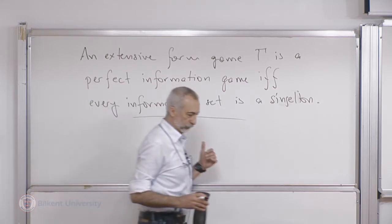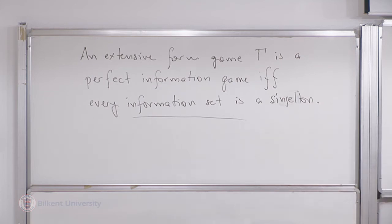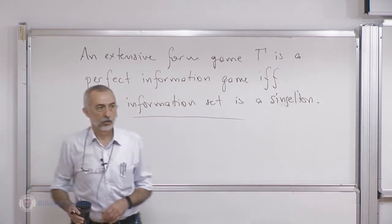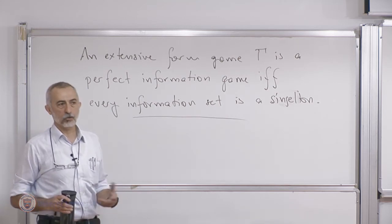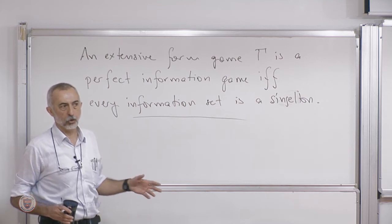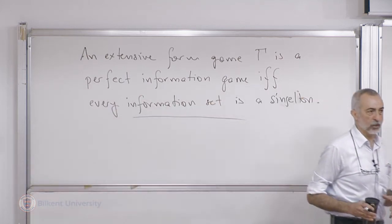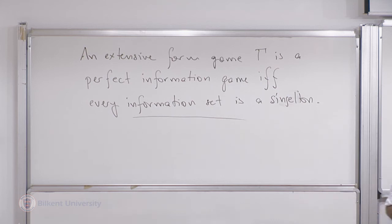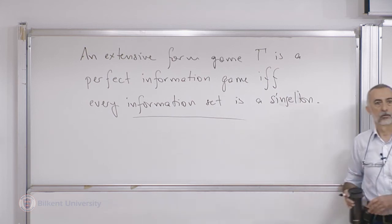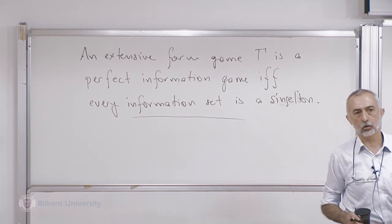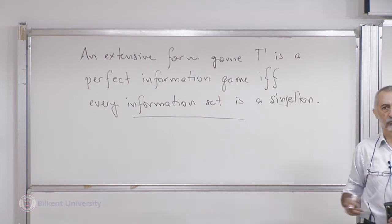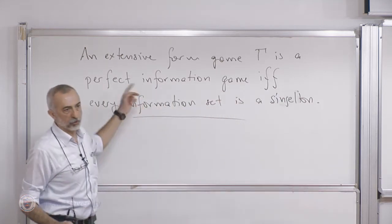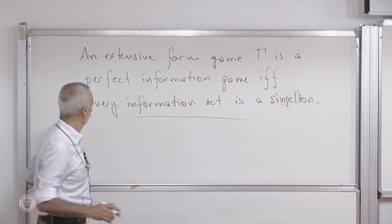There's another concept called complete information, which is different. When we say a game is complete information, it means that all the agents know the rules of the game, the payoffs of the agents, and so on. That's something we always assume — at least in this course, we assume all games are complete information. That is, every agent knows the rules, the order of actions, and each other's preferences over outcomes. Some games we study will be perfect information games, some not.